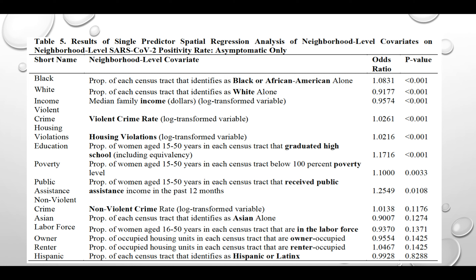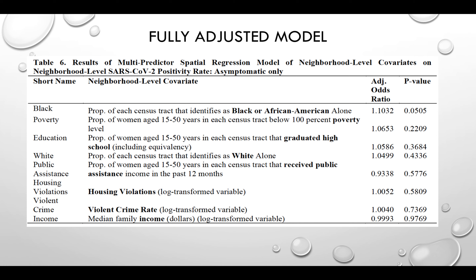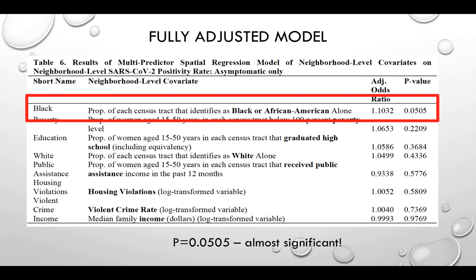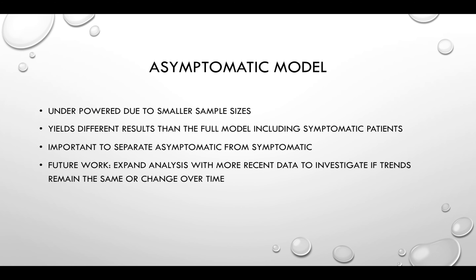The univariable analysis again showed many significant results, though slightly fewer than the full analysis. We took all significant factors and put them into a fully adjusted model. None of the variables in the fuller model were significant — we believe this is likely due to sample size. The factor closest to significance was the proportion of individuals identifying as Black or African-American alone. We believe this analysis was underpowered due to smaller sample sizes, but importantly it yields different results than the model including symptomatic patients, underscoring the importance of separating asymptomatic from symptomatic patients.